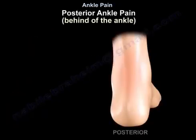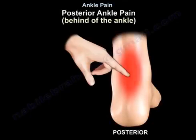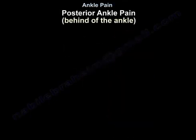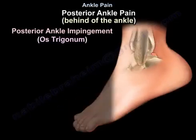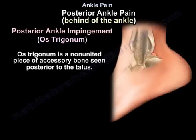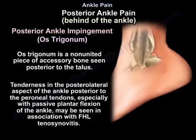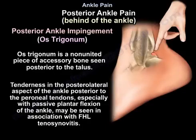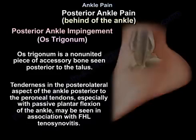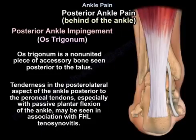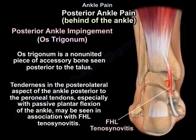Causes of pain on the posterior aspect of the ankle include posterior ankle impingement due to the os trigonum. The os trigonum is a non-united piece of accessory bone seen posterior to the talus. Tenderness in the posterolateral aspect of the ankle, posterior to the peroneal tendons, especially with passive plantar flexion, may be seen in association with flexor hallucis longus tenosynovitis.